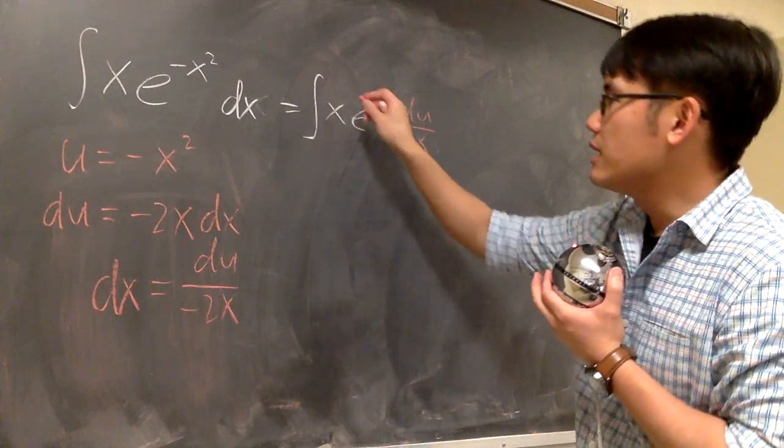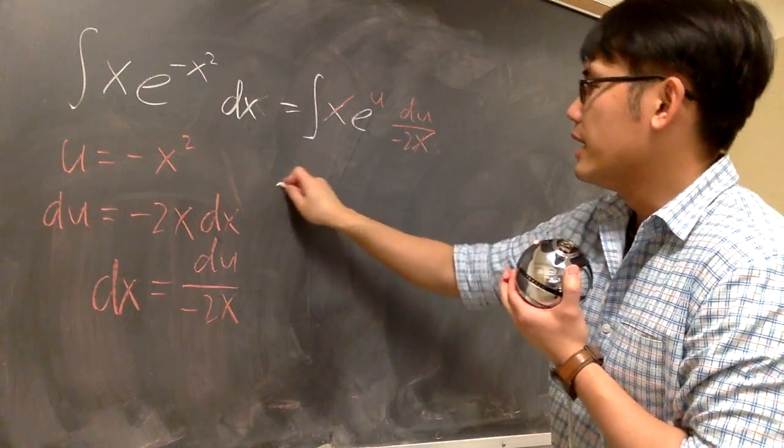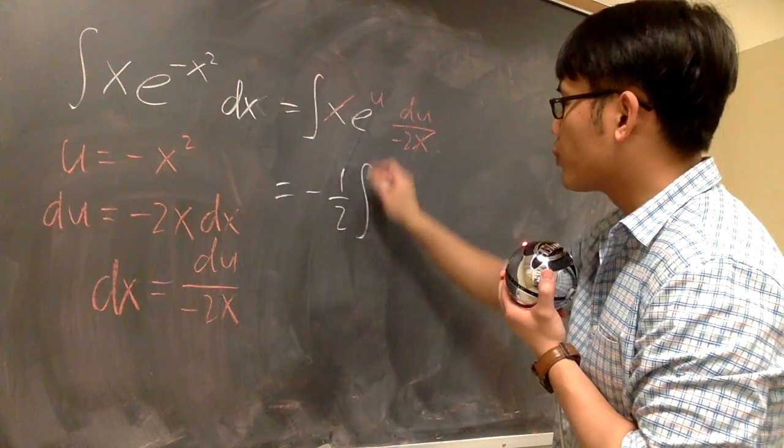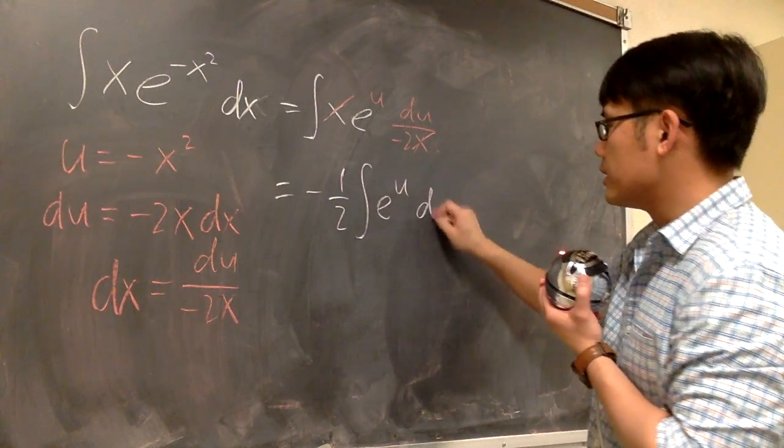And then now you can see dx and x will cancel each other out. And here I have a negative 1 over 2. Let me bring that outside, and we have the integral e to the u du.